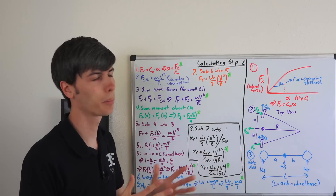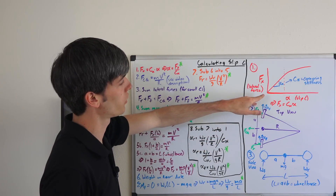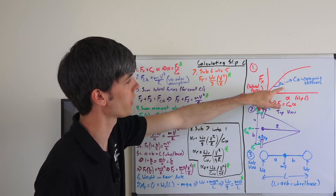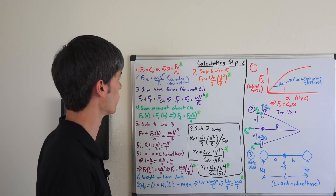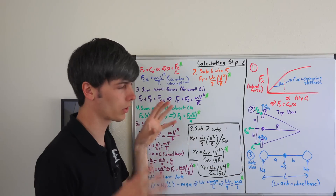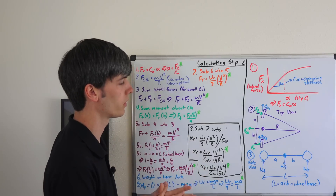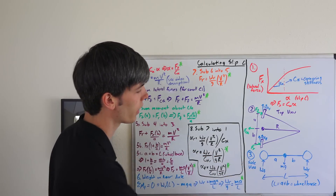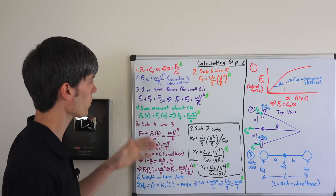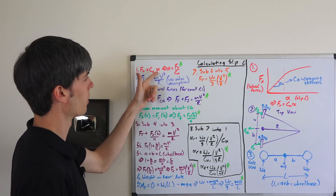I've got three diagrams here. The first one shows lateral force versus slip angle — it has a linear curve for small slip angles, so the lateral force equals the cornering stiffness (a property of the tire) multiplied by the slip angle. The second diagram is the bicycle model — a top-down view of a car where the two front wheels and two rear wheels are each combined into one. The third model looks at the car from the side, showing the front tire, rear tire, and center of gravity in the middle.